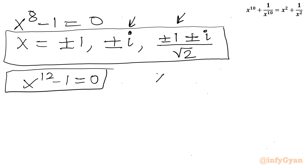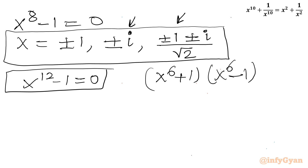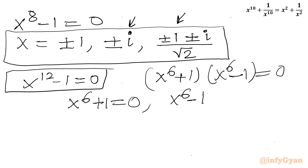Now for x^12 - 1 = 0, I can factorize by applying the difference of two squares: (x^6 + 1)(x^6 - 1) = 0. So the conclusion is: x^6 + 1 = 0 and x^6 - 1 = 0. Let us solve both equations one by one.